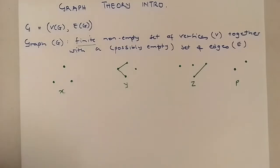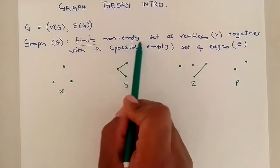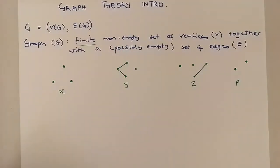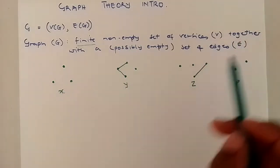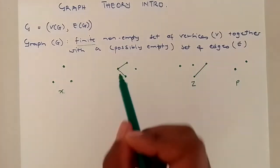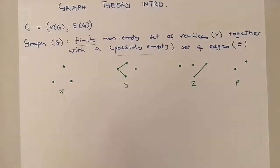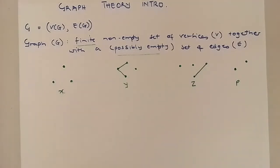Finite emphasizes that the vertices in a graph are not infinite — they have a specific number. It is a finite non-empty set of vertices, so you cannot have a graph with no vertices. Together with a possibly empty set of edges — this just means it is possible to have a graph without edges. For example, graph X and graph P do not have edges.